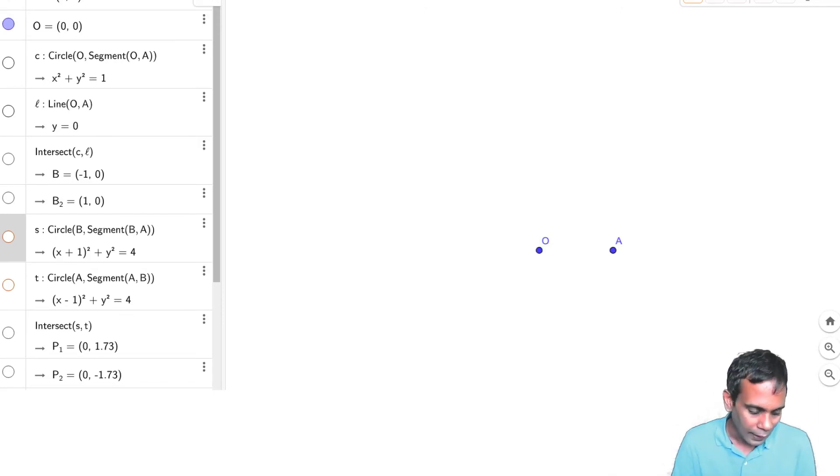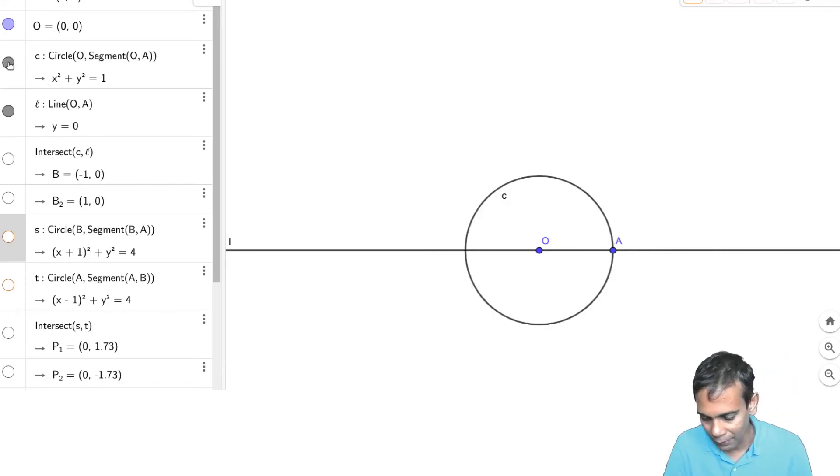Okay, and then we can draw a line through it and we can draw a circle with center O and radius given by the distance from O to A, and we call that circle C. Okay, so you can read the code here. It's a circle C with center O and radius the segment O to A.